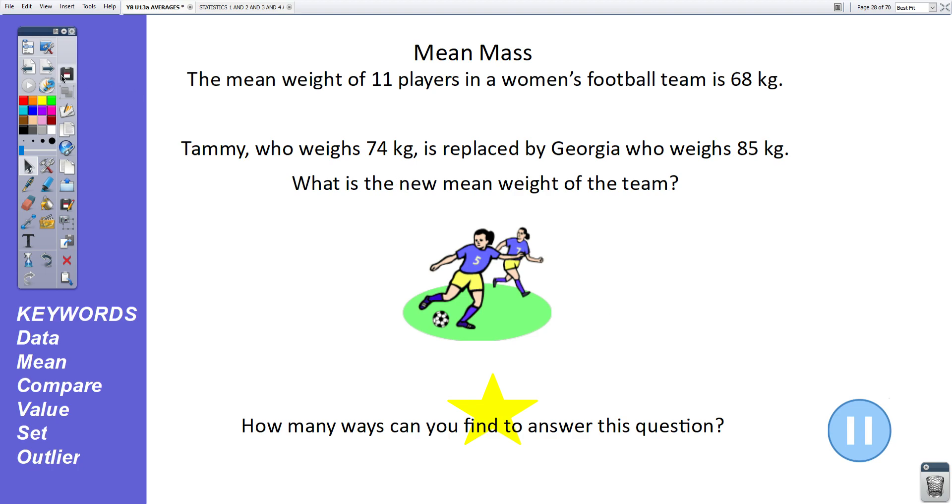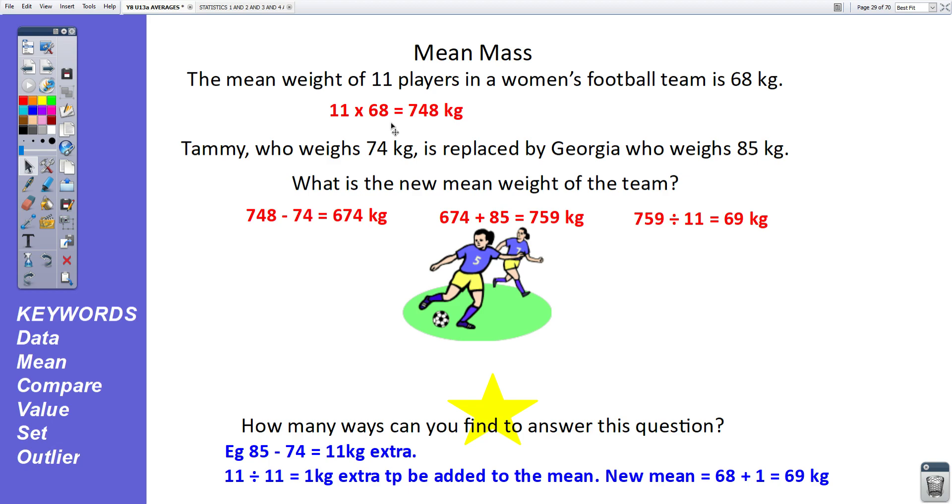Okay, let's have a look. Right, the simple way is to work out the total weight of the women's football team. There's 11 players, their mean is 68. So their total weight must be 11 times 68, which is 748 kilograms. Now Tammy is being replaced, so we can take away her 74 kilograms, which leaves 674 kilograms. Georgia's joining the team, she weighs 85. So we add 85 onto this 674. The new total weight of the team is 759 kilograms. There are still only 11 members in the team, so 759 divided by 11 gives our new mean of 69 kilograms. That is the simplest way to approach this.